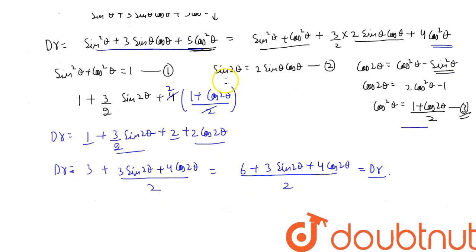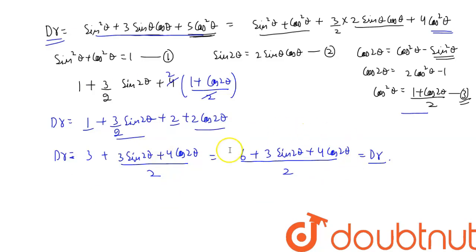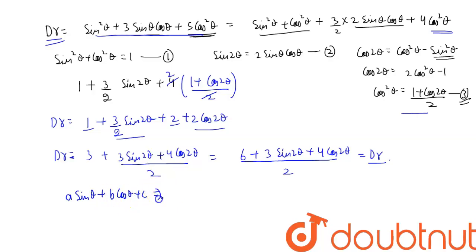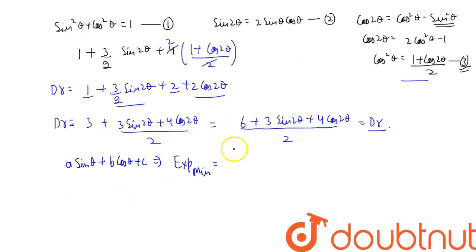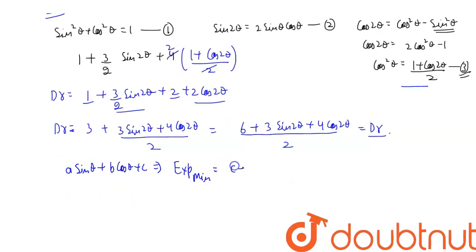The original expression attains its maximum value when this denominator attains its minimum value. To find the minimum value of an expression of the form A·sinθ + B·cosθ + C, the minimum value is C − √(A² + B²). We will apply this as equation 4.